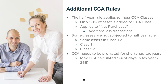CCA also needs to be prorated for a shortened tax year. For example, if you have a shortened tax year in the year you created or closed your business, you have to prorate the CCA based on how many days of the year the company was operating.